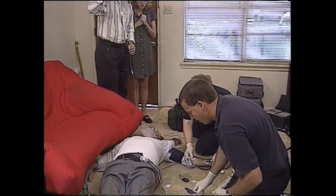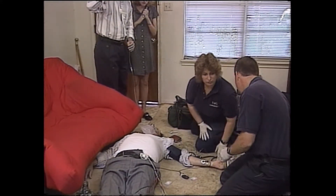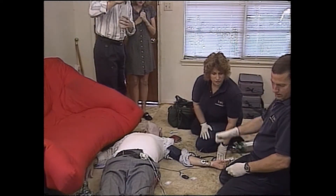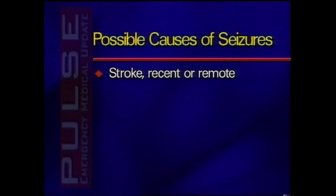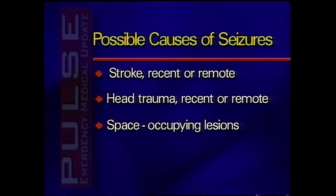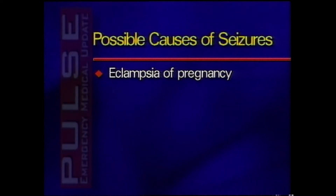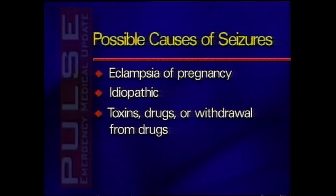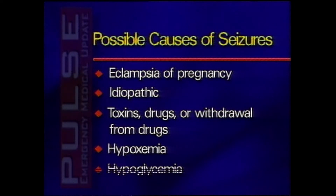Once the seizure has been stopped, the physical assessment should search for possible causes of seizures, which include a recent or remote stroke, head trauma, space-occupying lesions such as brain tumors or subdural hematomas, meningitis, eclampsia of pregnancy, idiopathic or unknown causes, toxins, drugs or withdrawal from drugs, hypoxia, and hypoglycemia.